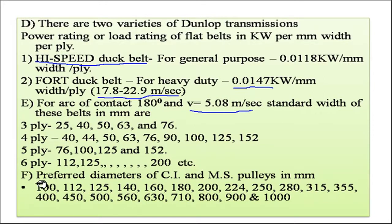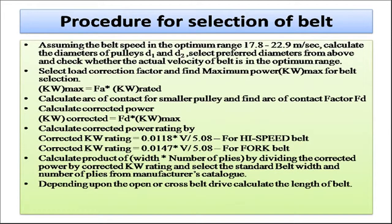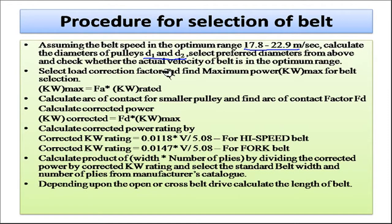Standard preferred diameters of cast iron and mild steel pulleys in mm are specified as 100, 102, 125, and so on. From these standard values, one must select the appropriate diameter for the specific application. The steps for belt selection are: first, assume the belt speed in the optimum range of 17.8 to 22.9 meters per second and calculate pulley diameters D1 and D2. Round up these values to preferred standard diameters, then verify that the actual belt velocity is within the optimum range.